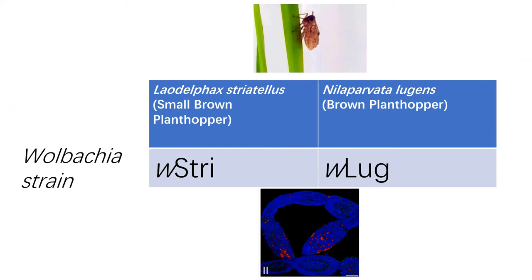What we've done in this paper is to transfer Wolbachia, which is a bacterium living inside the cells of the rice plant hopper, between two species of rice plant hoppers. The first, known as the small brown plant hopper, was the donor strain. The second, known as the brown plant hopper, which is probably the major pest of rice, was the recipient strain.